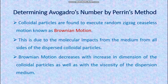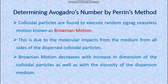In this case, we will use the method of colloidal particles. This method is called Brownian Motion of Colloidal Particles. Colloidal particles are found to execute a random zigzag, ceaseless motion known as Brownian Motion. This is due to the molecular impacts from the medium on all sides of the dispersed colloidal particles. This zigzag motion is ceaseless — meaning restless, never stationary.